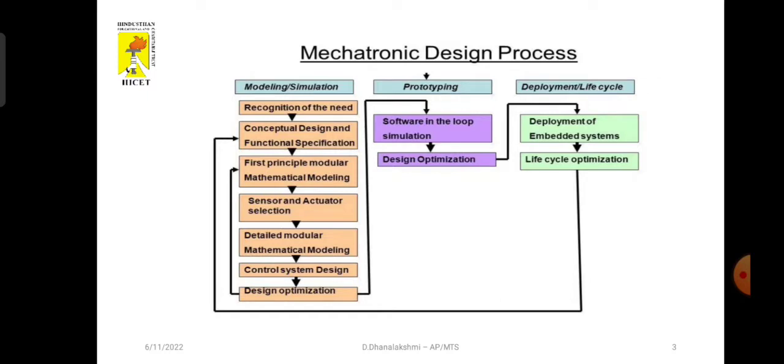For every electromechanical product, we have to produce the model of the system. Mathematical modeling means we have to develop the model for the particular system or application. It includes first recognition of the need. What is the need to produce this product? We have to identify. And the next one is conceptual design and functional specification.